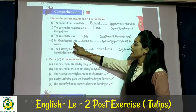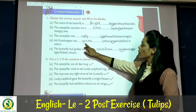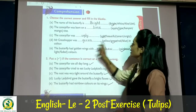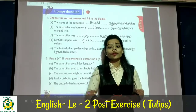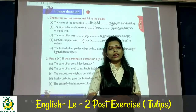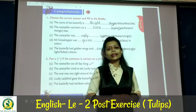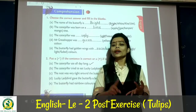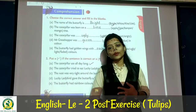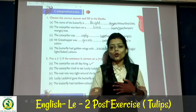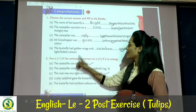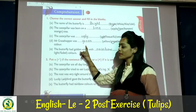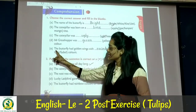Next: Mr. Grasshopper was blank in color. The grasshopper's color — both the grasshopper and caterpillar were green. So write 'green' here.